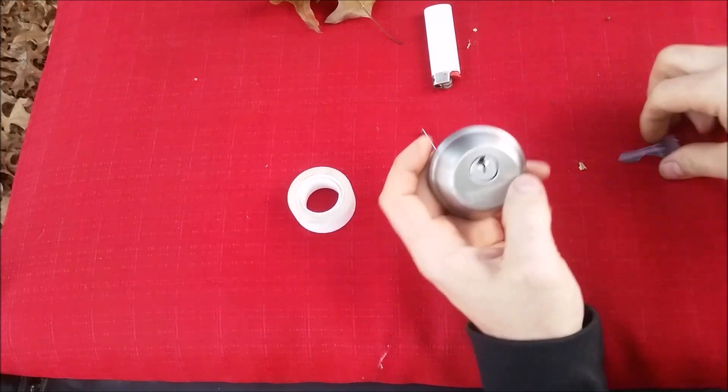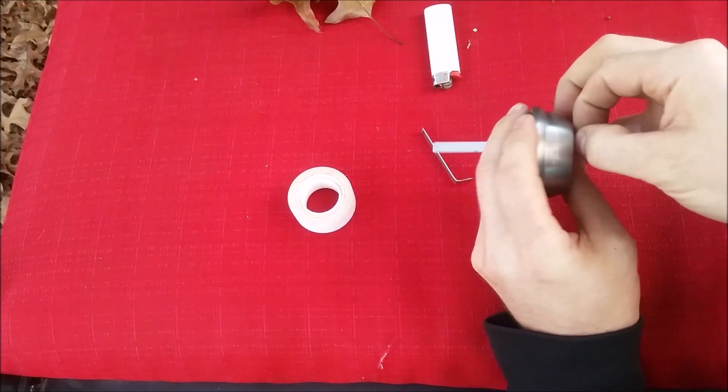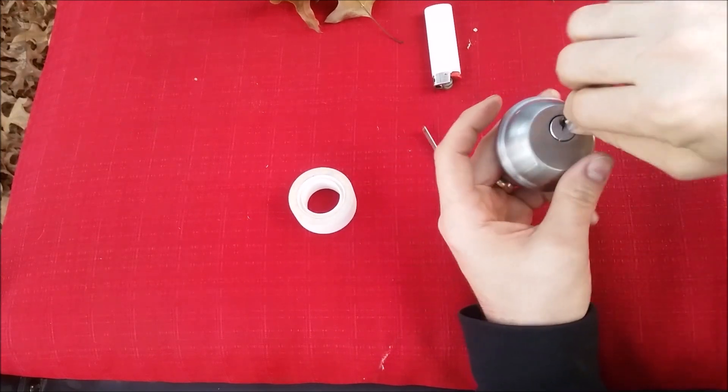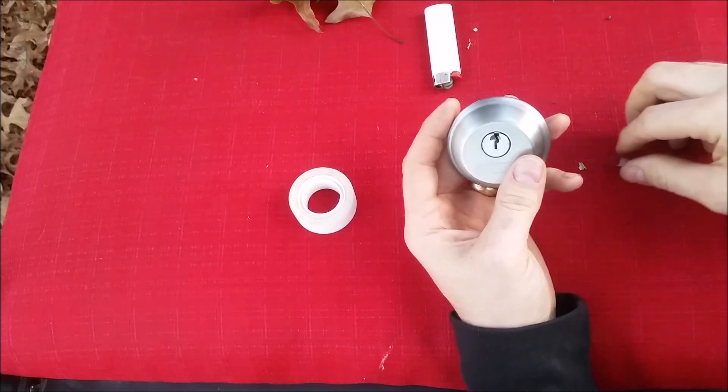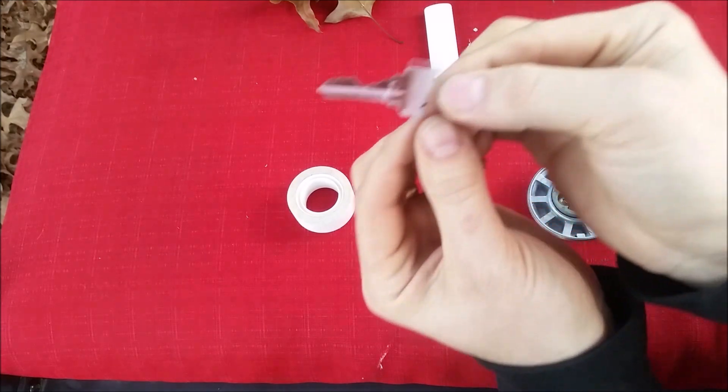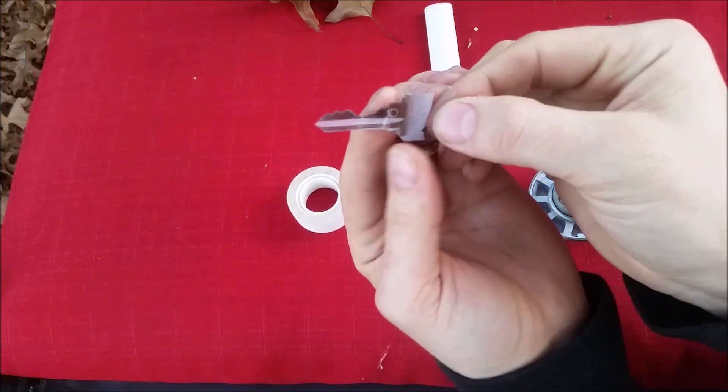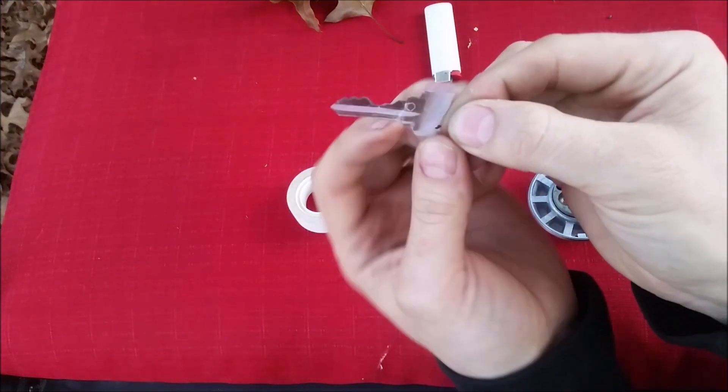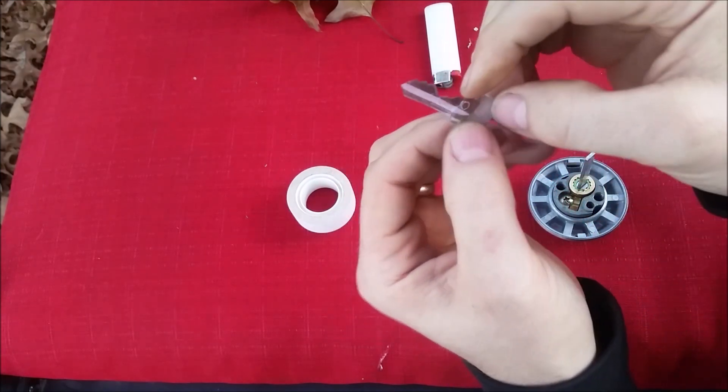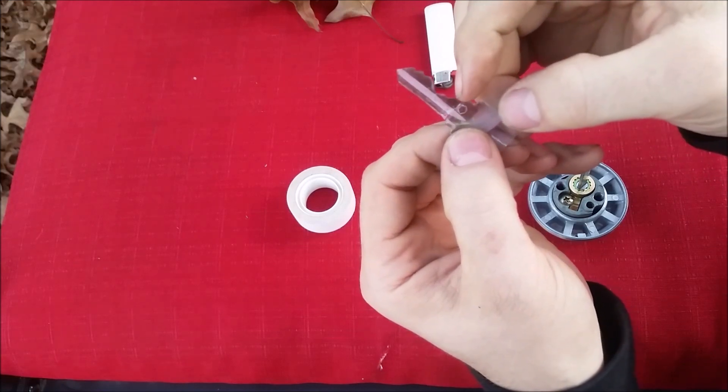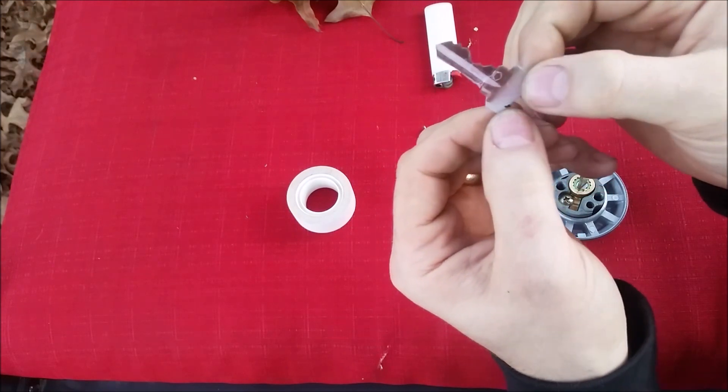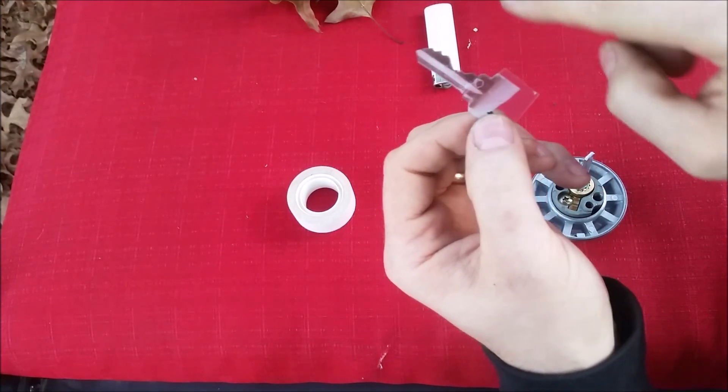Well, you could use anything. You could use the edge of a credit card once you push that in there to help assist it in turning around, because there are different parts to a key. If you look, this part right here that stops the key is the shoulder.